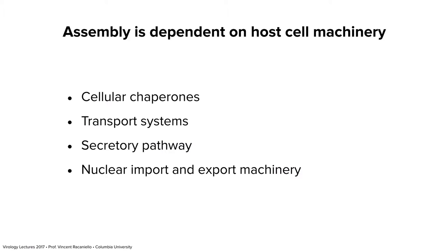Don't assume that just because you have viral proteins and nucleic acids they'll spontaneously come together to make exactly what you need. In many cases we almost get there, but in all cases we need some cell help — and that shouldn't be surprising because viruses are obligate intracellular parasites. Virus assembly requires, for example, cellular chaperones: proteins whose job is to make sure that proteins fold properly and interact with each other in the correct way. Of course these have cell functions that viruses have co-opted.